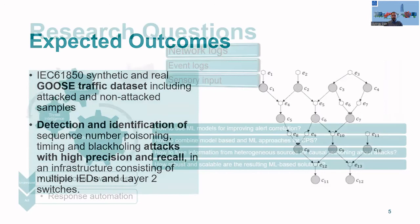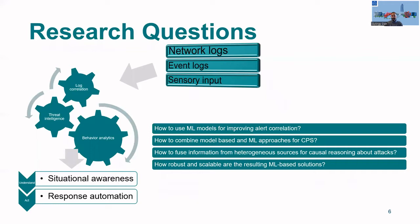If we look at the overall problem of detecting attacks, typically what we have is some network logs and event logs together with sensory inputs in the case of a cyber-physical system. We try to correlate the events, that is the log entries, and we use threat intelligence and behavior analytics to obtain situational awareness, which is knowing what is going on in the system right now. If we have accurate situational awareness, we can then take good response actions. This is response automation.